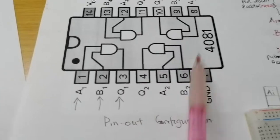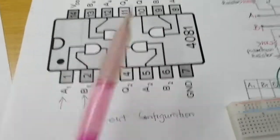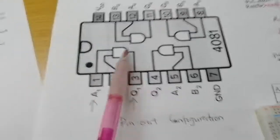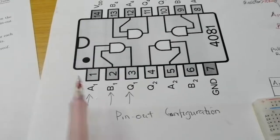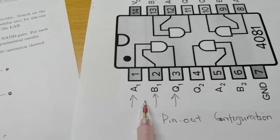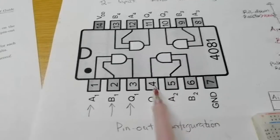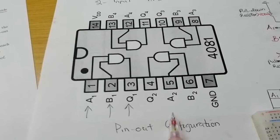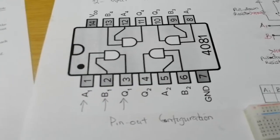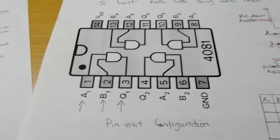You can use any of them, so feel free to play around — it gives you the same result. In this example I'm using pin one, two, and three: that's A1, B1, and Q1. I got this from Texas Instruments online, so you can always find the pin configuration there.